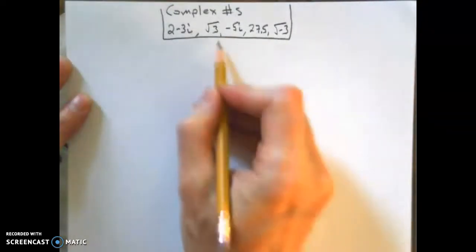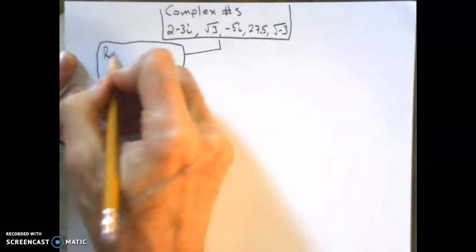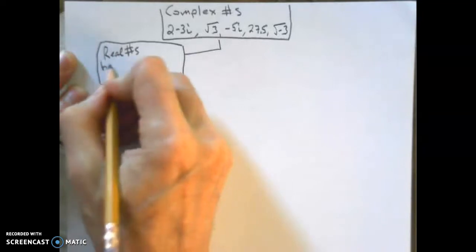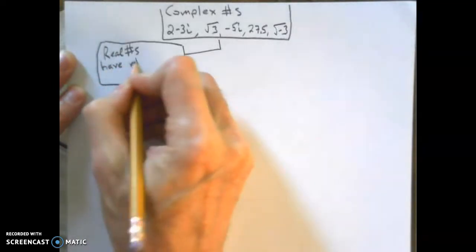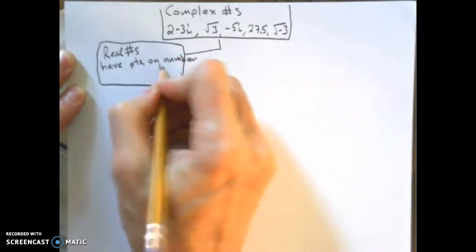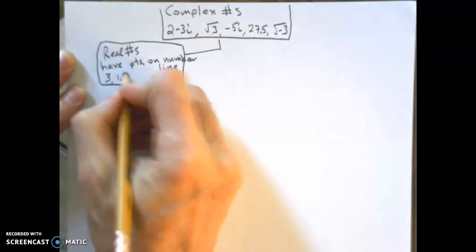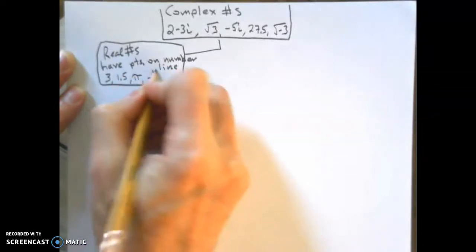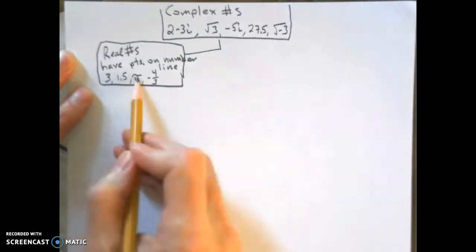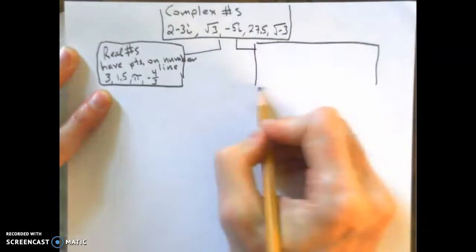Complex numbers include real numbers. Real numbers are numbers that have points on the number line. Examples: 3, 1.5, pi, negative 4 thirds. If you draw the number line, you could point to where all of these numbers would fall on the number line. If it's not real, it's an imaginary number.